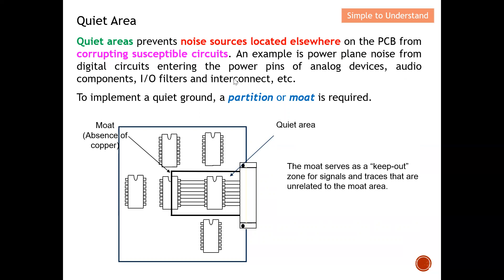An example of interference is power plane noise from digital circuits entering the power pins of analog devices, audio components, I/O filters, and interconnections. Noise entering a digital circuit or an analog device creates significant issues. To implement a quiet ground, a partition or moat is required. Here you can see that I designate a quiet zone, and in this quiet zone I use a moat to carve out this space — technically no unrelated copper lines should run into this space.